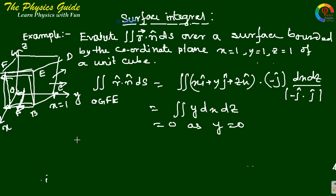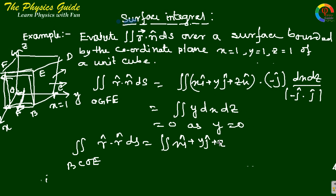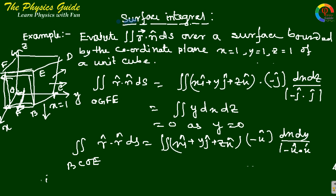For the last surface BCOE, the integral equals the integral of (x*i + y*j + z*k) dot (-k-cap). The normal direction is along the negative z-axis, and the plane is the x-y plane, giving ds equals dx dy divided by (-k dot k), which is 1. This also gives 0 since z equals 0 for all points over this surface.